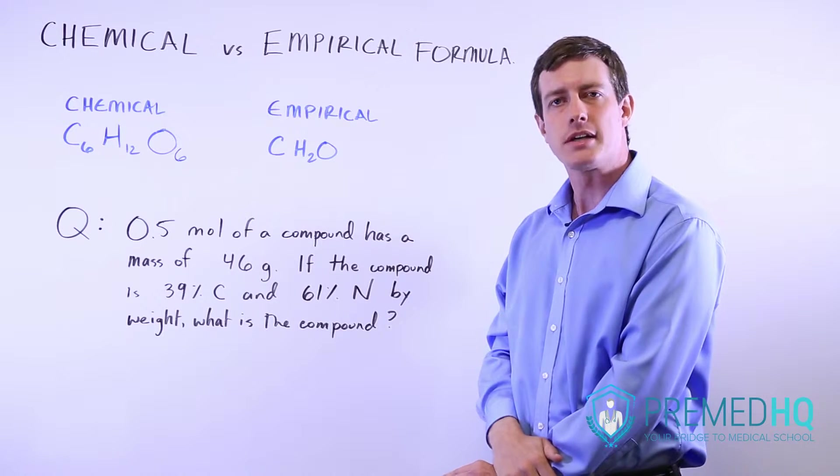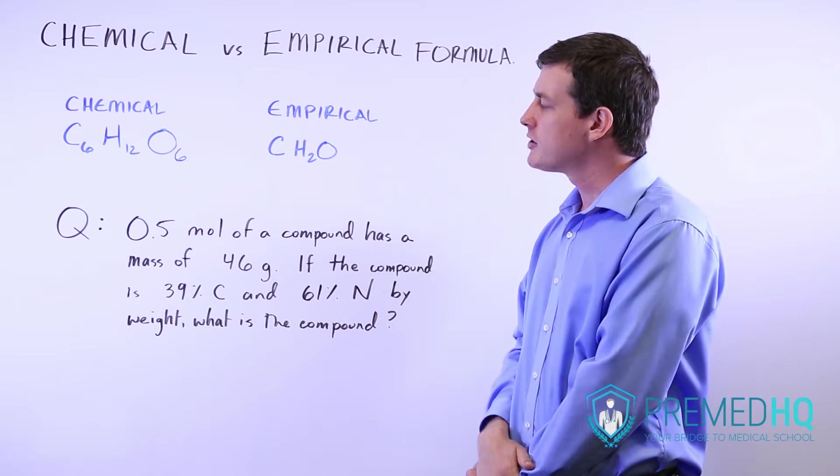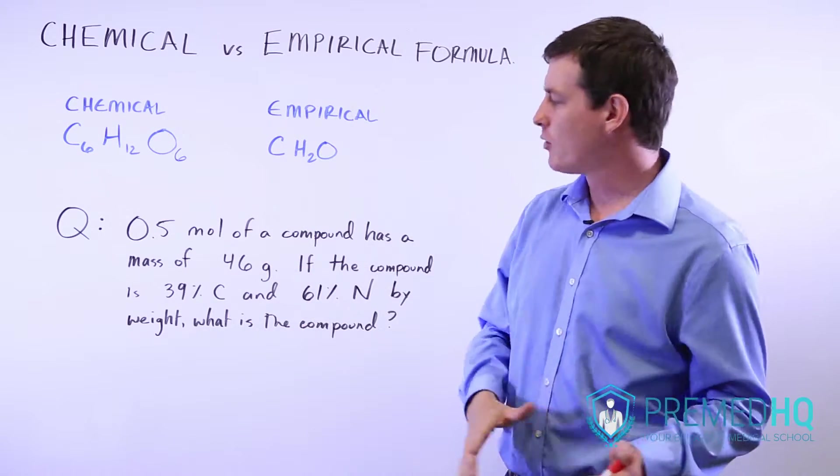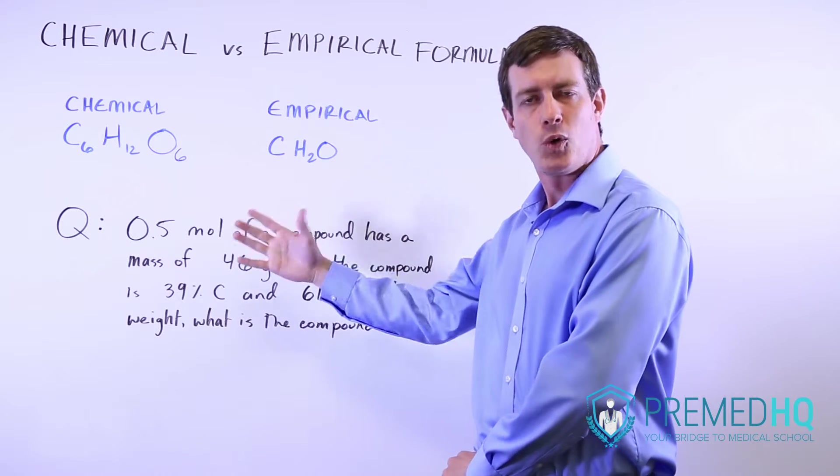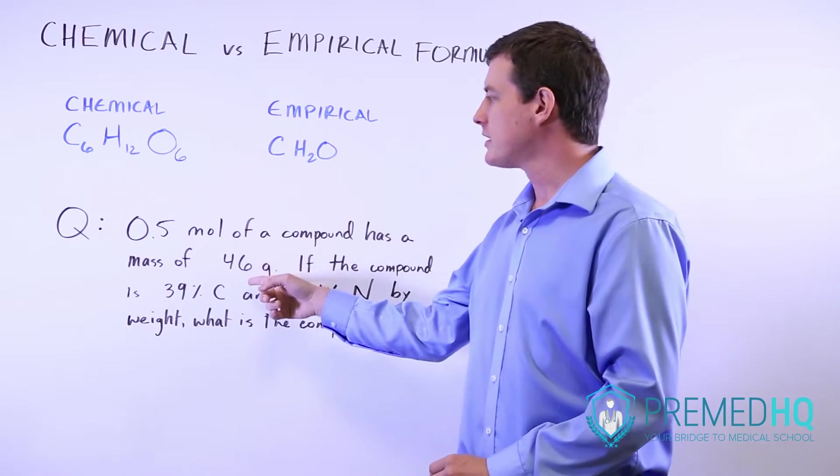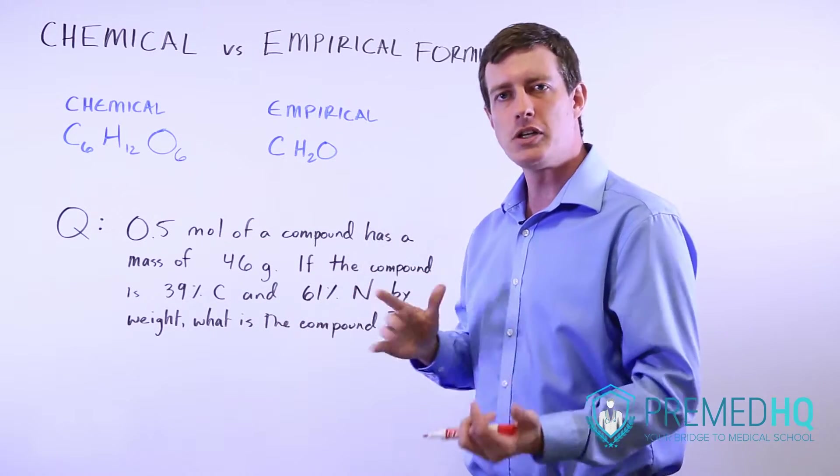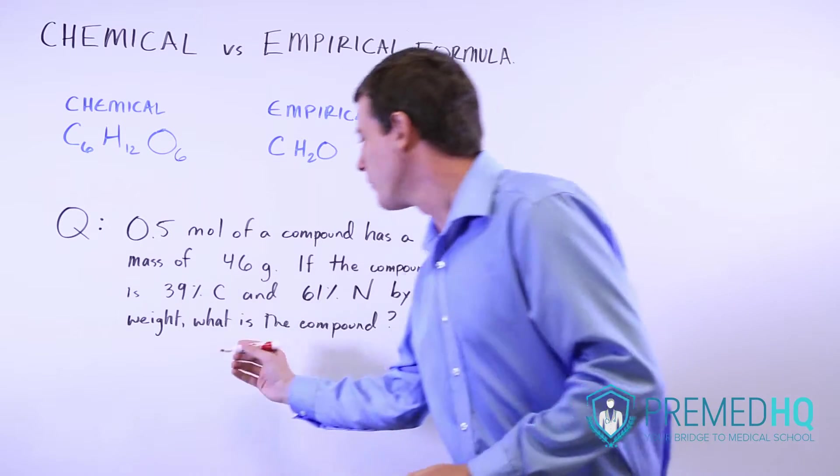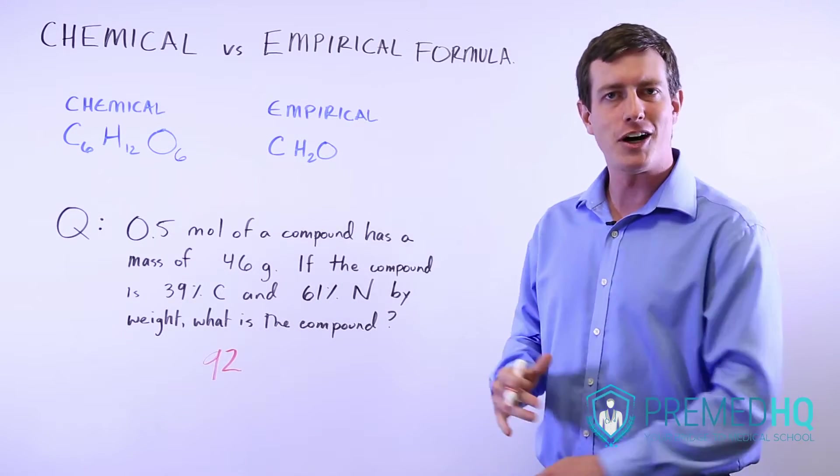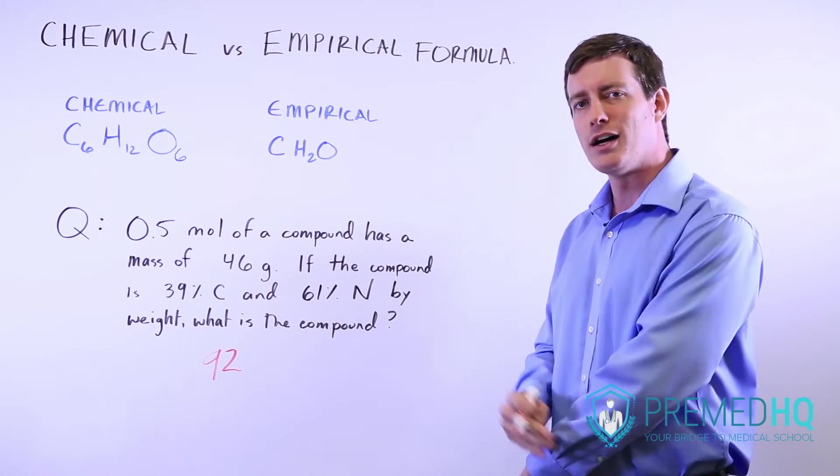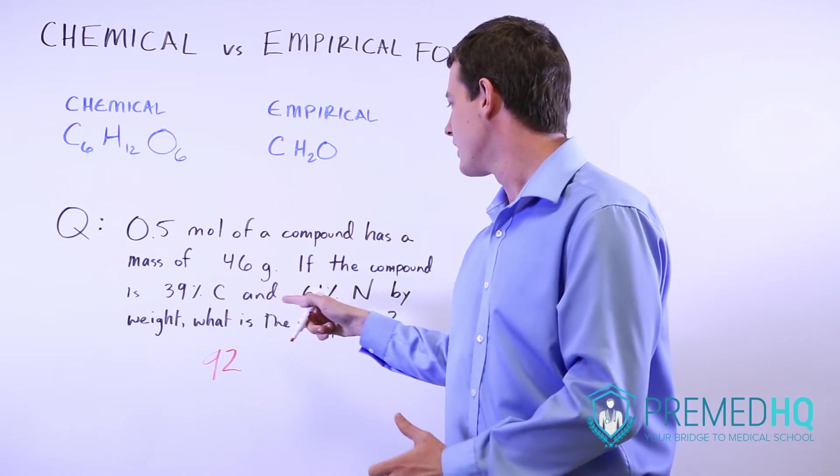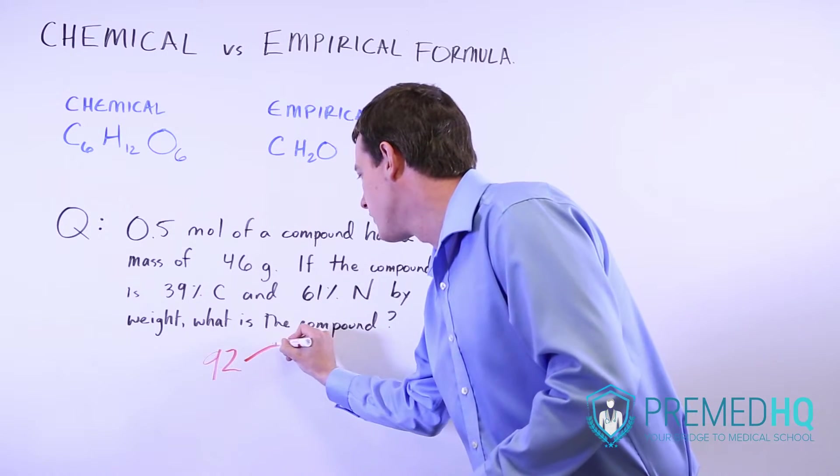We'll work through this step by step. First, we have to realize we only have half a mole but we have a mass of that. Atomic weights and masses are measured by the mole or by AMU per single molecule. We need to double this number to figure out grams per mole. We'll take this 46 and double it to get 92. So 92 is the molecular weight of the compound. Those 92 grams are divided into 39% carbon and 61% nitrogen. You would end up with around 36 grams of carbon and 56 grams of nitrogen.